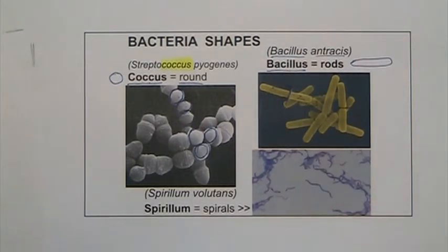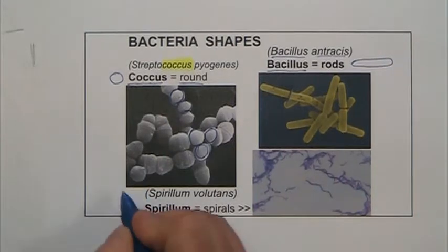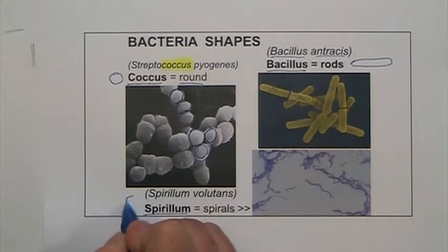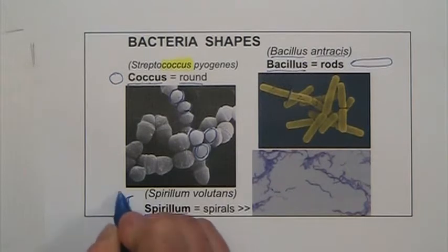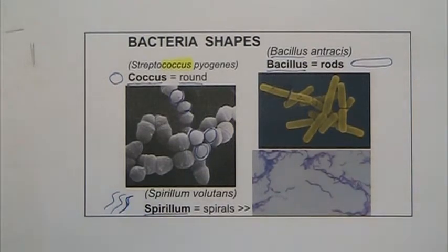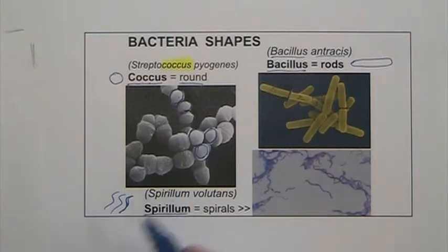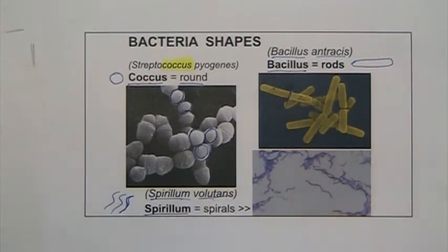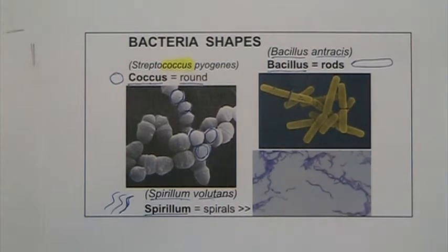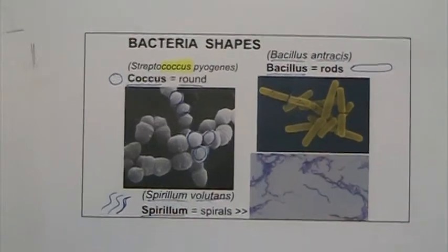Finally, there is another shape called spirillum — these bacteria are like little spirals, little coils that look like mini snakes. An example is Spirillum volutans. You need to recognize all three shapes of bacteria: coccus, bacillus, and spirillum.